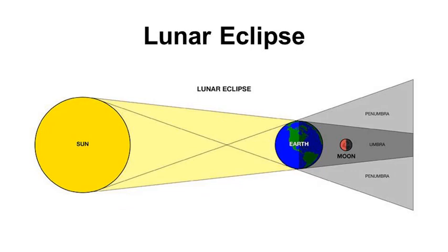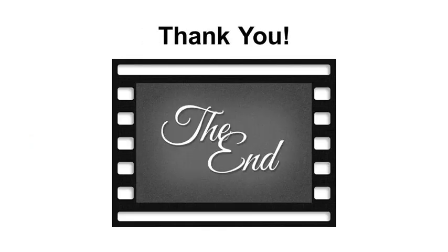Lunar eclipses occur at full moons. During a lunar eclipse, the earth is exactly between the sun and the moon. That is, the moon is in opposition to the sun. Generally speaking, a full moon signifies an ending. Thank you for watching.